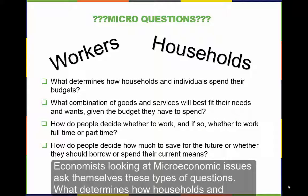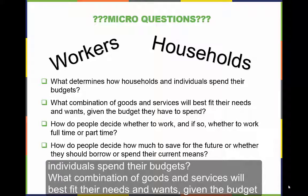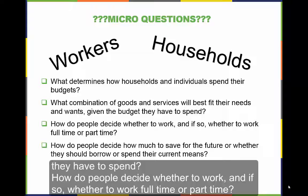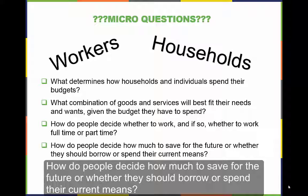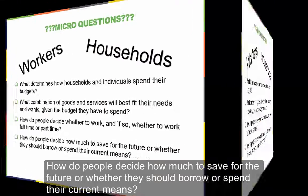Economists looking at microeconomic issues ask themselves these types of questions. What determines how households and individuals spend their budgets? What combination of goods and services will best fit their needs and wants, given the budget they have to spend? How do people decide whether to work, and if so, whether to work full-time or part-time? How do people decide how much to save for the future, or whether they should borrow or spend their current means?